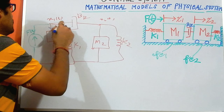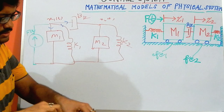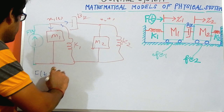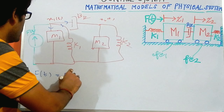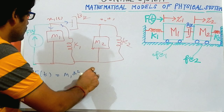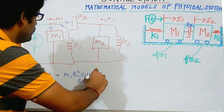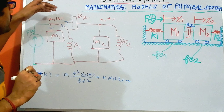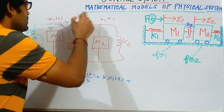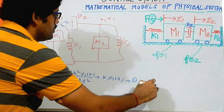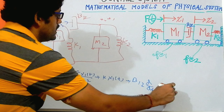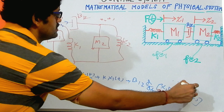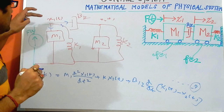By using the same method, I will write the equation. At node x1t, I have got the equation: ft is equal to m1 times d²x1t/dt² plus k1·x1t. And as I am taking x1t as our reference, that is why x1t will be greater, so b12 times d/dt of (x1t minus x2t). This is our first equation, applied at node x1.